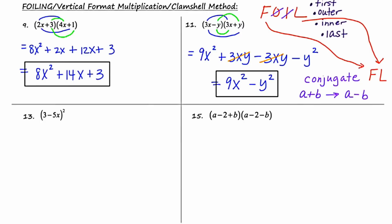In example 13, we're asked to square a binomial. Fundamentally, when you square something, you multiply it times itself, so I'm going to write that twice. This is not a situation where we have a binomial times its conjugate — it's just a straight-ahead FOIL problem.